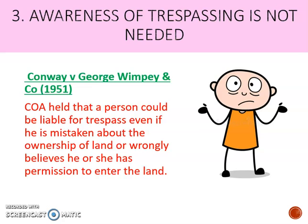The third rule is that awareness of trespassing is not needed. The defendant does not need to know they are trespassing in order to be guilty. In Conway v George Wimpey, the Court of Appeal said that a person can be liable for trespass even if they mistakenly thought they owned the land or wrongly believed they had permission to enter. Deliberately entering the land is enough, even if they think they have a right to be there. This is practically useful — otherwise people would simply claim they did not know they were trespassing.